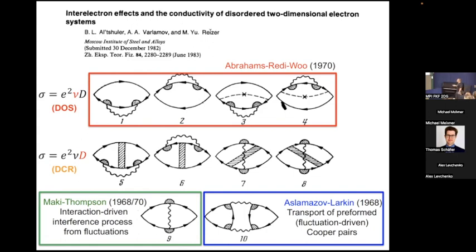It first was studied by Aslamazov and Larkin. It goes by their name, so Aslamazov-Larkin contributions. This is a contribution to conductivity due to the thermally excited Cooper pairs. The Maki-Thompson contribution is an interaction-driven quantum interference effect. It resembles weak localization physics but it's really driven by interactions. About the same time, Abrahams and Redi-Wills also considered the density of states effect.